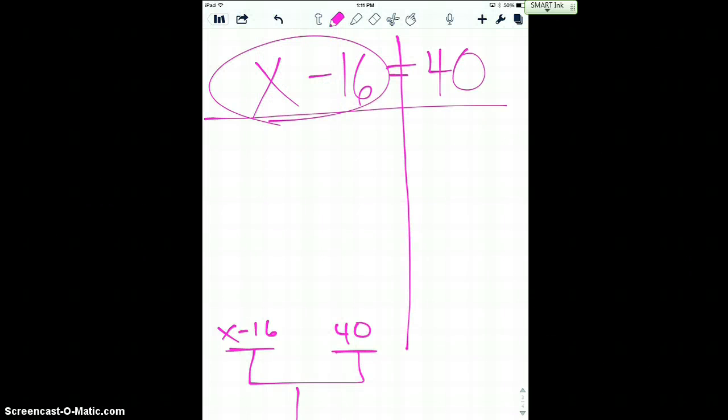So first step, first line, rewriting the equation. And then I'm gonna rewrite x minus 16 with leave a little space, and I'm gonna rewrite 40, leaving a little space behind it. And I'm trying to get down to just what x is worth. So how can we get this minus 16 to go away from the x? How can we get that to go away on the scale?